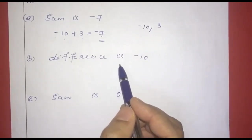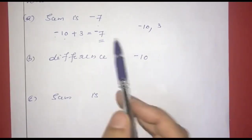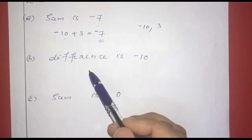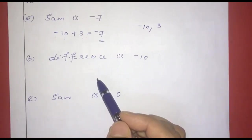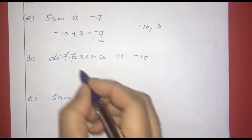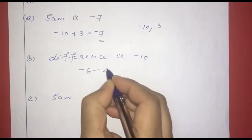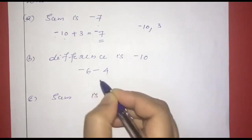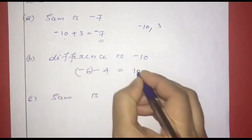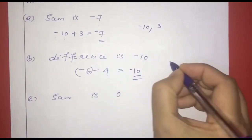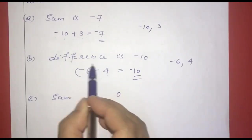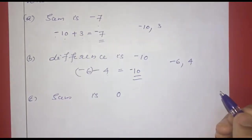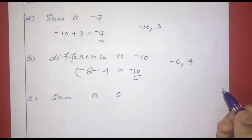The next part: the difference is negative 10. We need negative and positive numbers whose difference is negative 10. We subtract negative 6 and positive 4: negative 6 minus positive 4. The answer is negative 10. So the pair is negative 6 and positive 4.